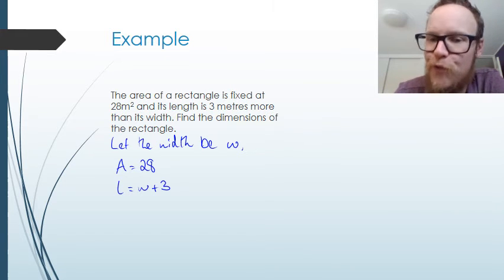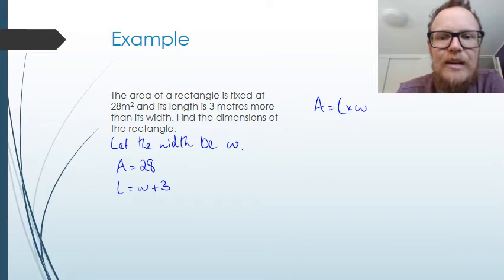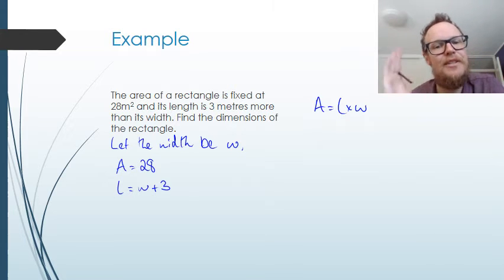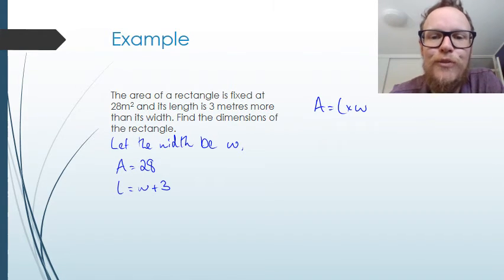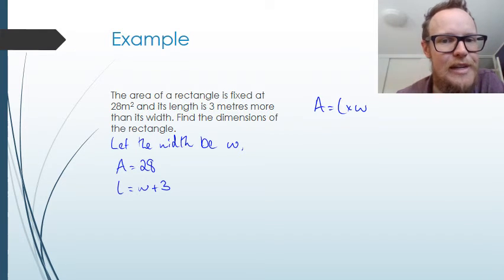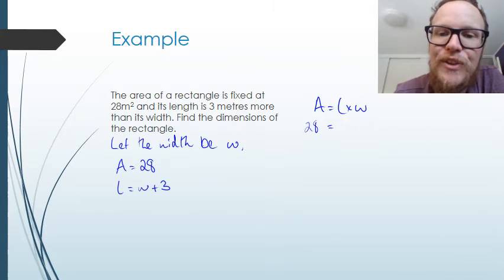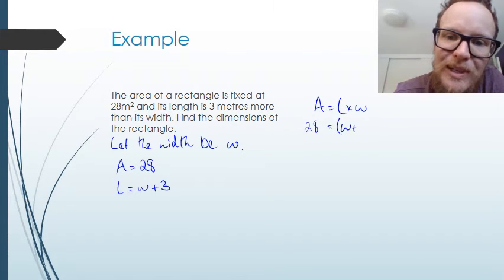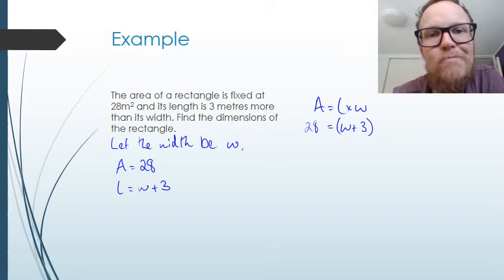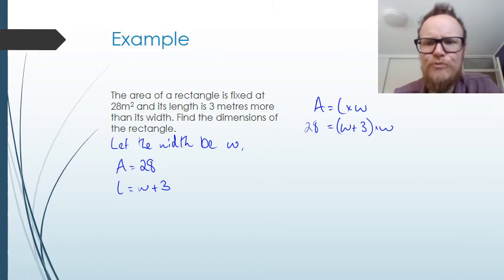Let's substitute these values in into a formula that we know. We know the formula for the area of a rectangle. Let's write that down. Area equals length times width. We don't need to define anything in that equation because it is well known that that is the formula for the area of a rectangle. Let's substitute in what we know now. We know that area is 28. We know that the length is equal to w plus 3. We said that. It says here the length is 3 meters more than the width. And we multiply that by w.